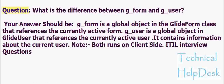Question: What is the difference between g_form and g_user? Your answer should be: g_form is a global object in the GlideForm class that references the currently active form. g_user is a global object in GlideUser that references the currently active user and contains information about the current user. Note: both run on the client side.